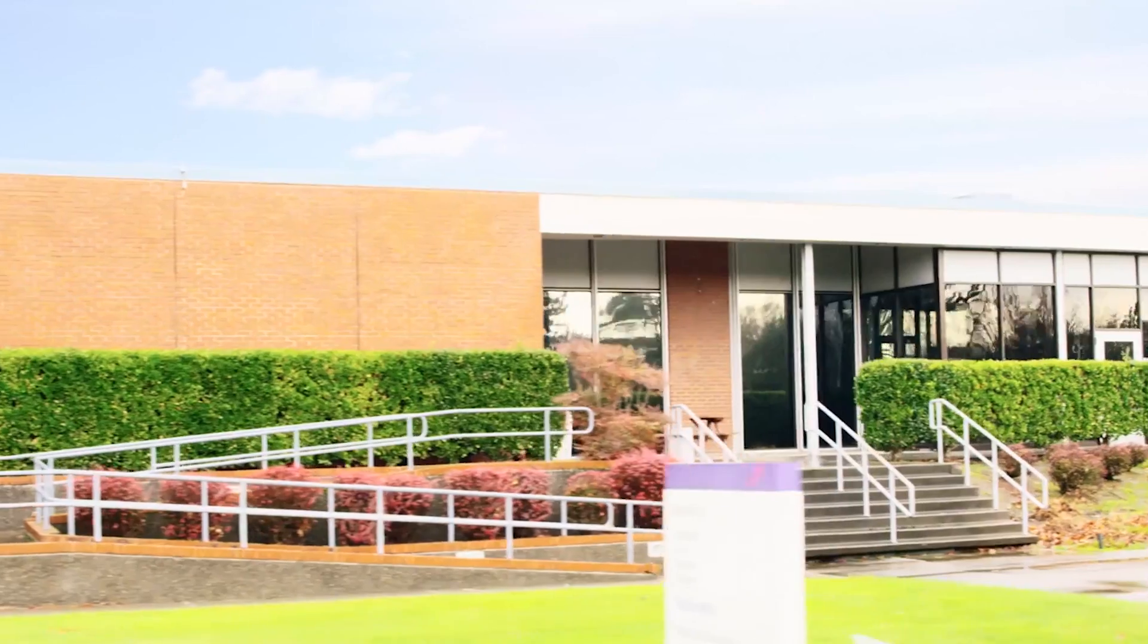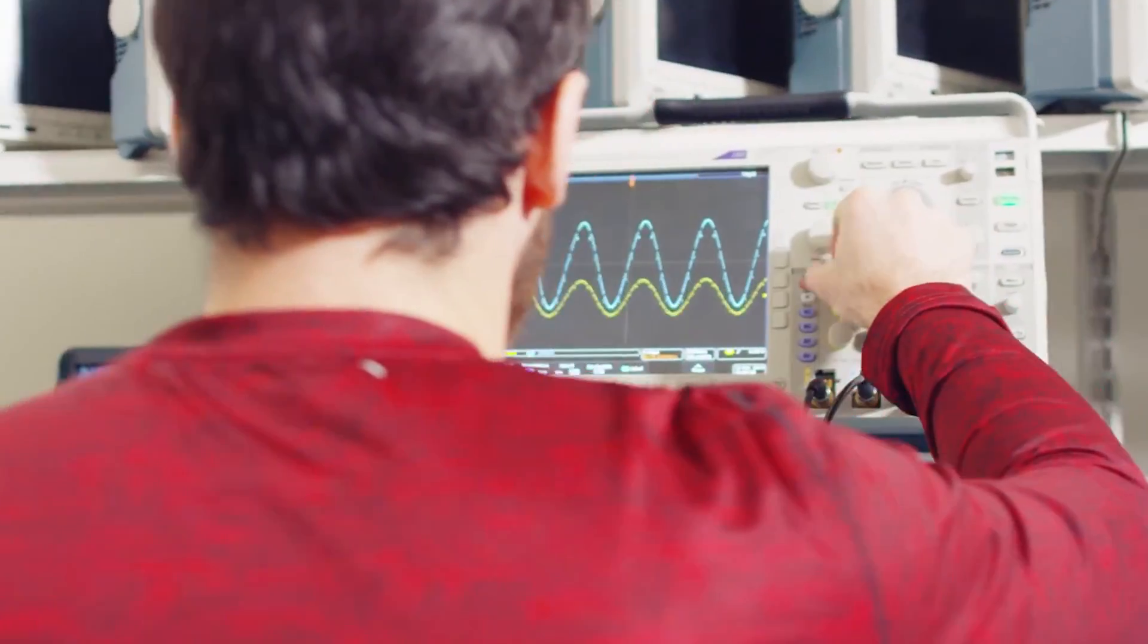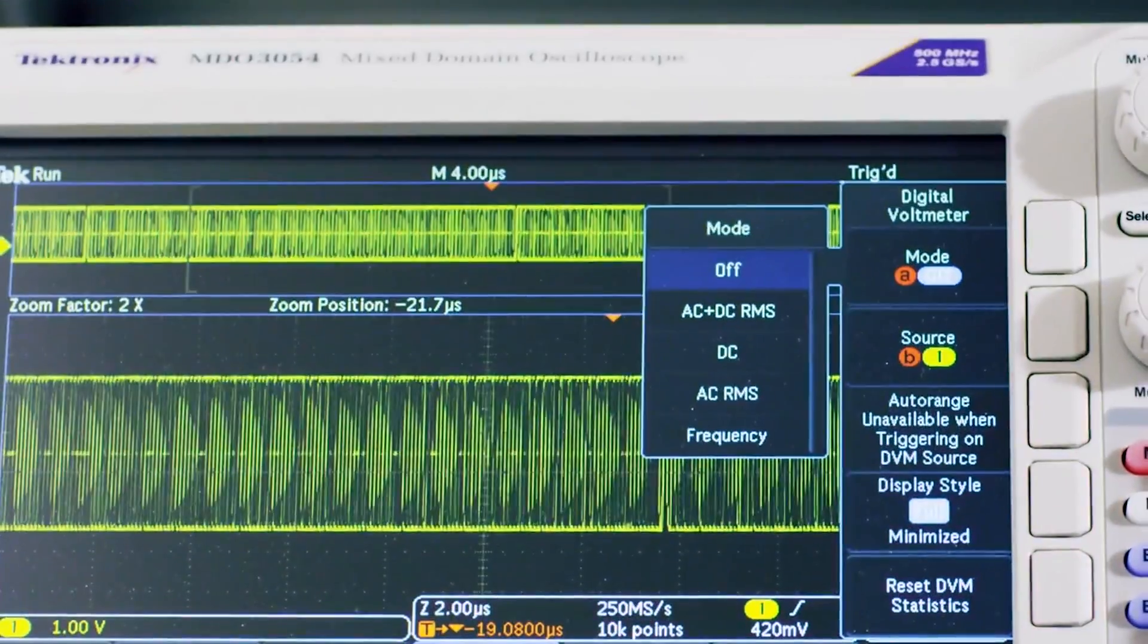Tektronix is a 70 year old company headquartered in Beaverton, Oregon which is just outside of Portland and we make scientific measurement equipment, mostly hardware.